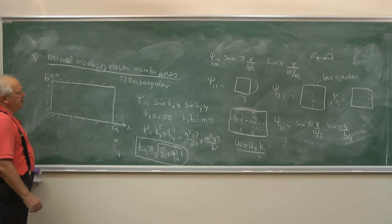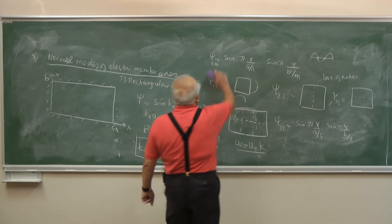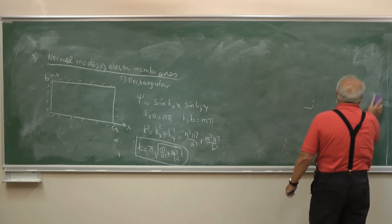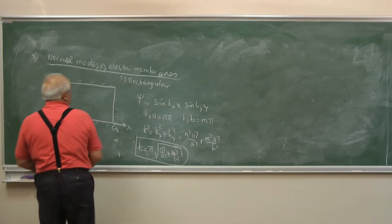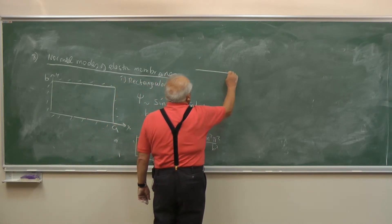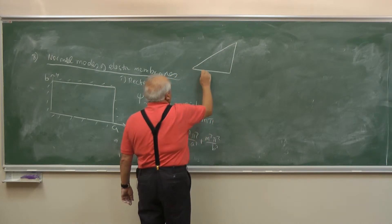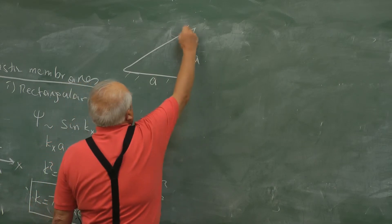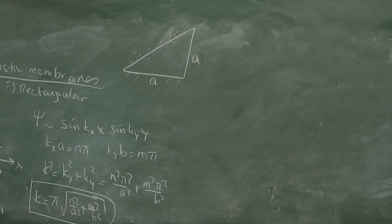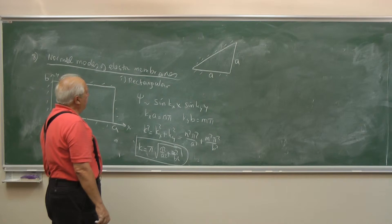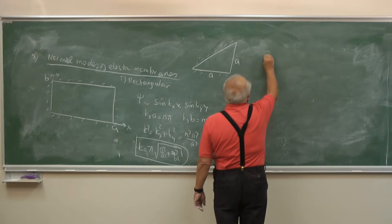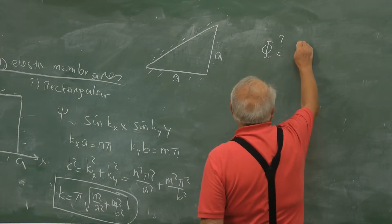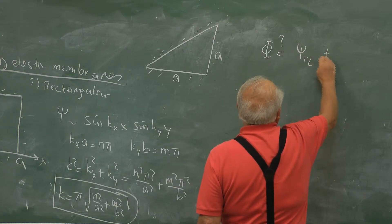There are nice applications of this. Consider a square membrane. The question is: what is the fundamental frequency? We may play with this — can it be written as, apart from normalization, psi(1,2) ± psi(2,1)?